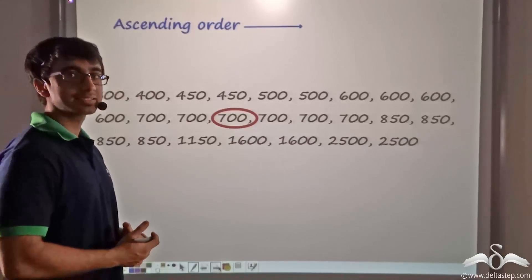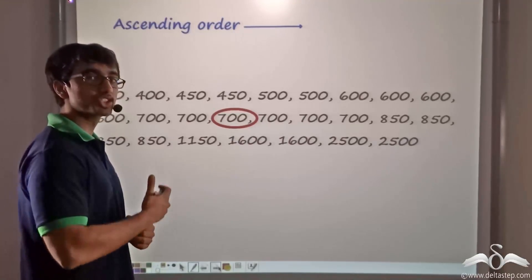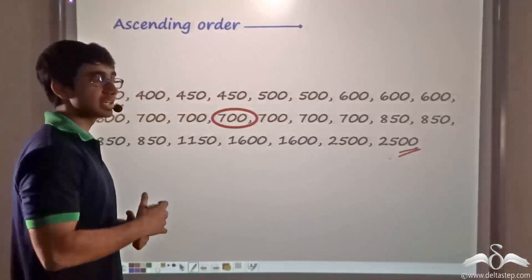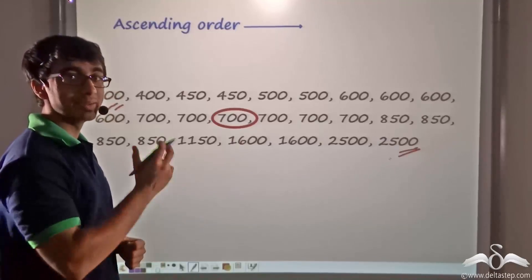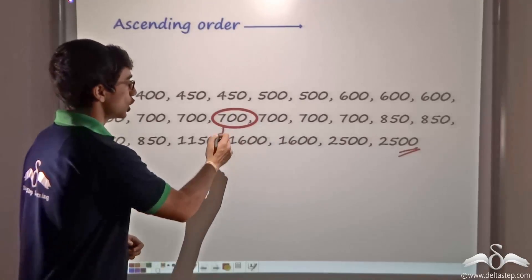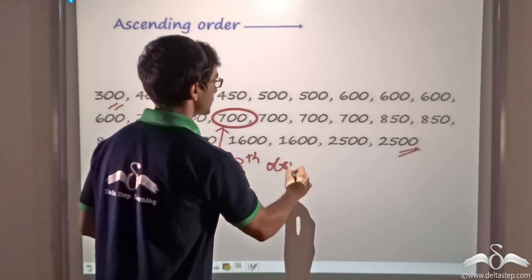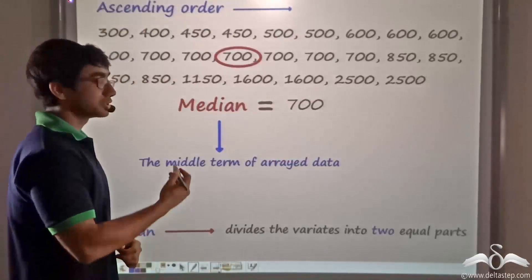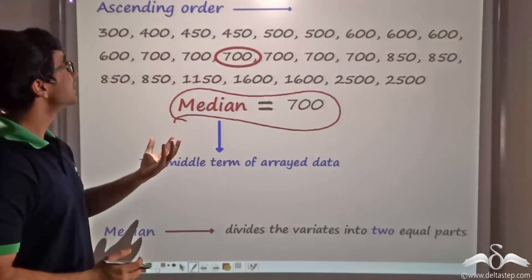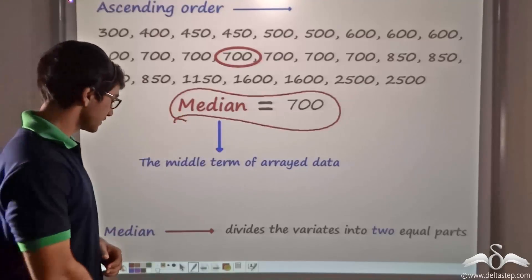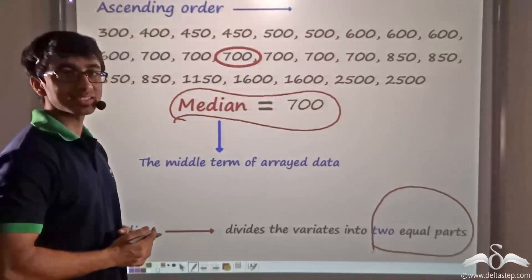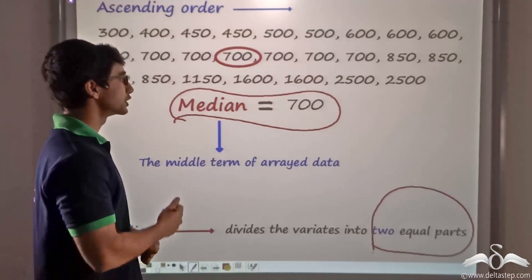The data — that is the money earned by selling individual dresses — has been arranged in ascending order, from the least to the highest. The shopkeeper then finds the middle value of this data, that is the middlemost observation. On doing so, he finds that the middle observation, the thirteenth observation, is equal to 700. This 700 is known as the median of the data. The median is the middle term of the data, and since it is the middle term, it divides the variates or observations into two equal halves.